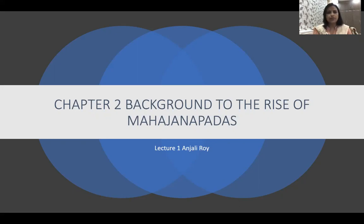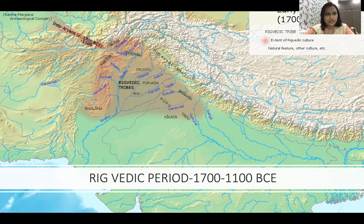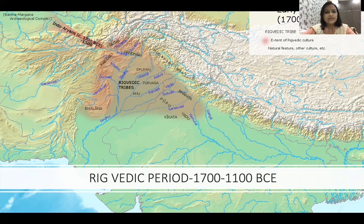We start with the political. After the decline of the Harappan civilization around 1800 BC, the next phase is that of the Aryans. I have put up a map — on the corner left you see Indo-Aryans, 1700 to 1500. Around 1700 BCE, the Indo-Aryans came to India via the route shown with the arrow mark, and they came in hordes. The Rig Vedic tribes established themselves in the middle Gangetic region.